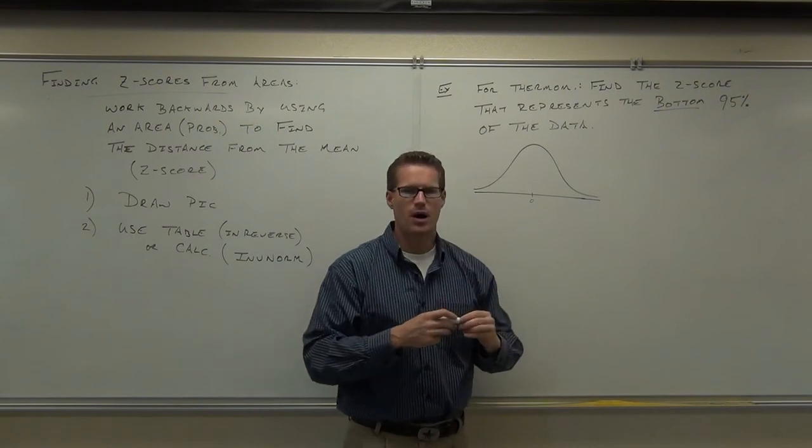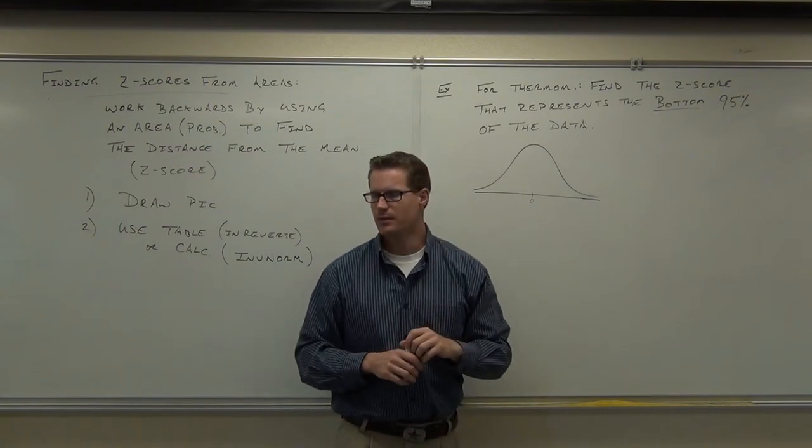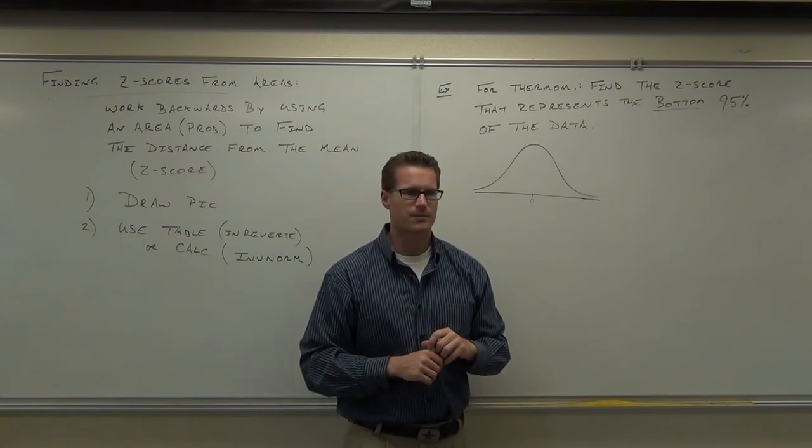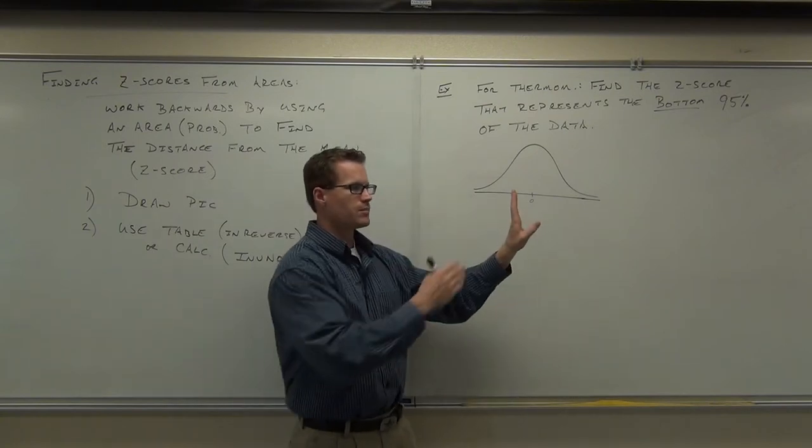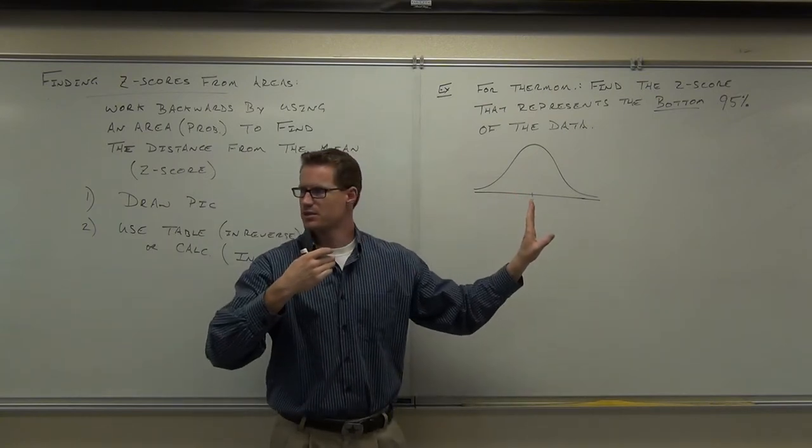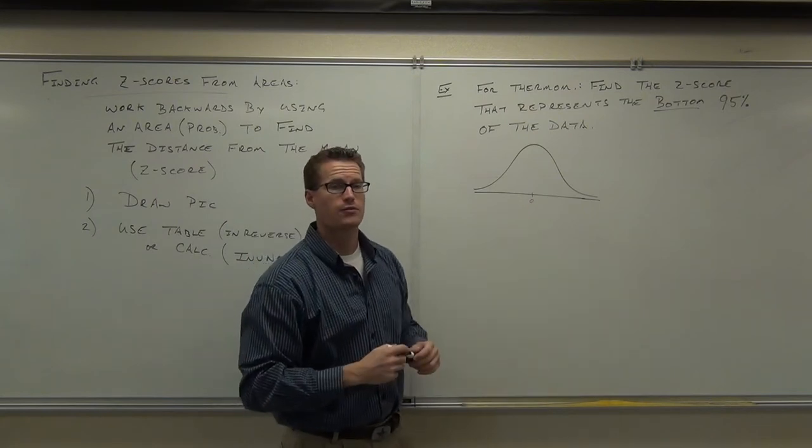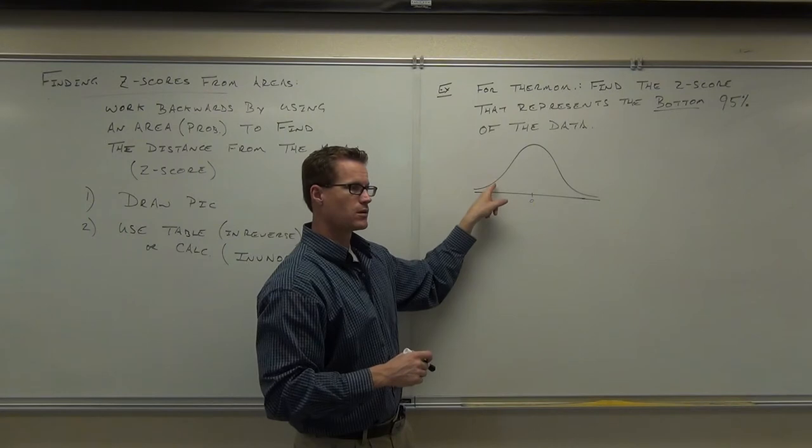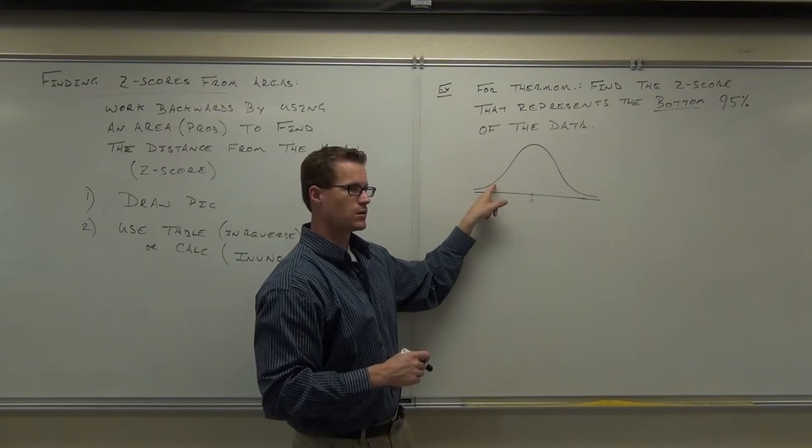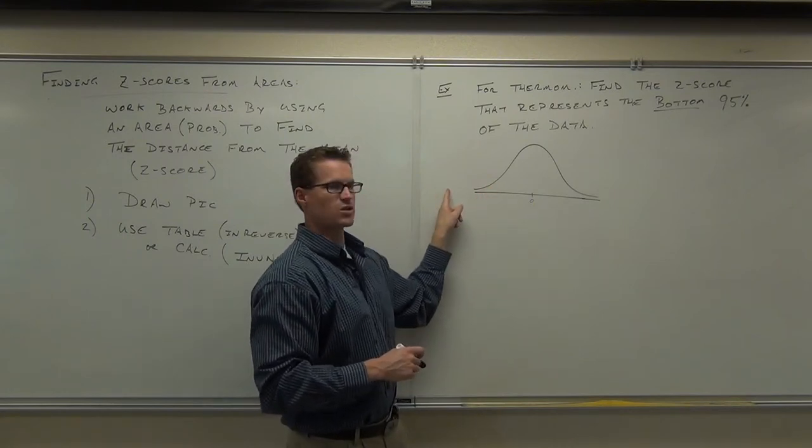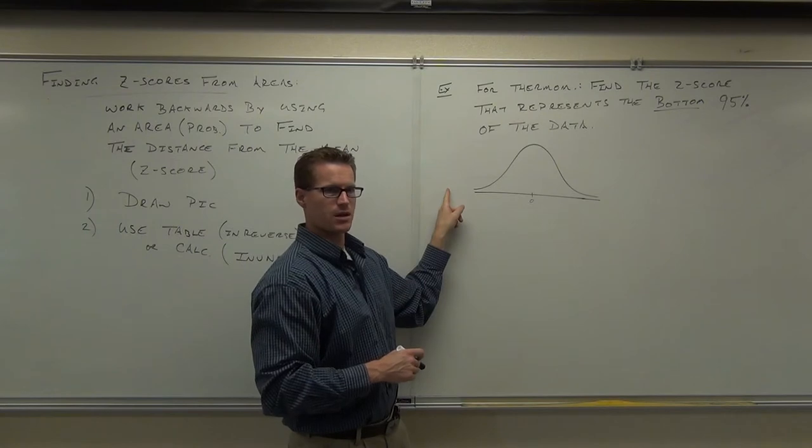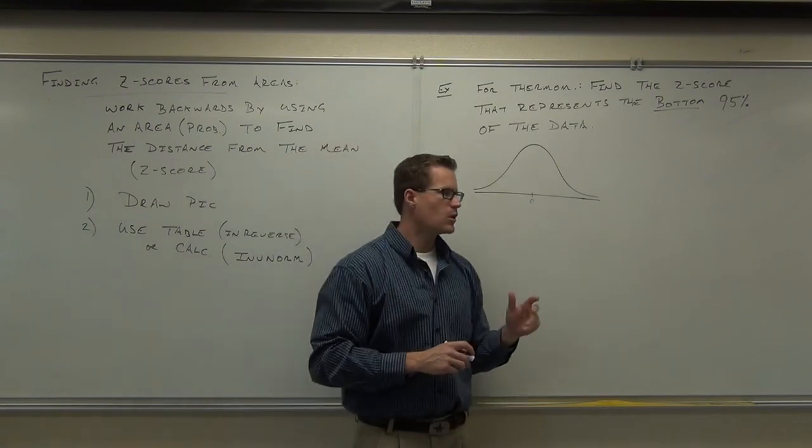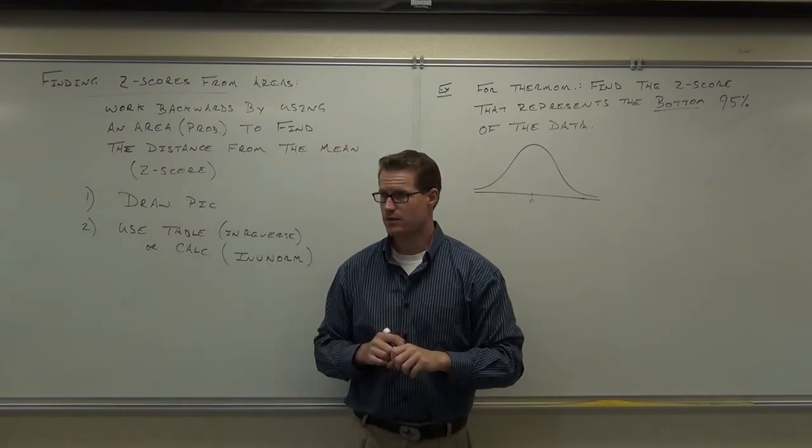If I'm talking about the bottom 95% of the data, the bottom 95%, that would be a value, and 95% of it would be lower than that. Does that make sense to you? So where are we going to draw our line for our area? Locate 50% first.